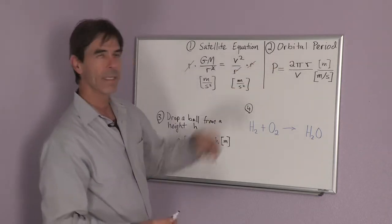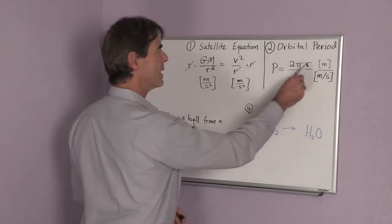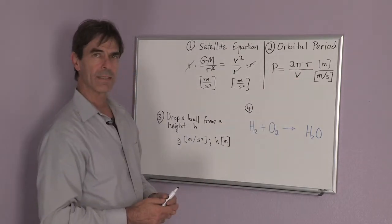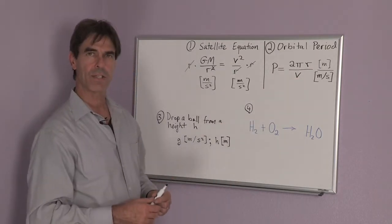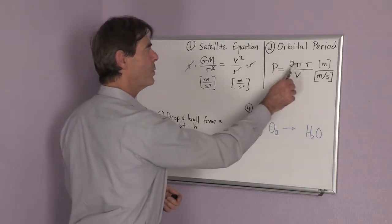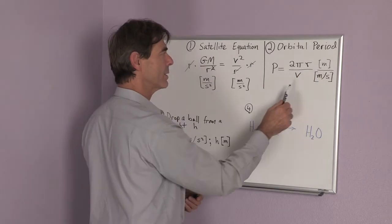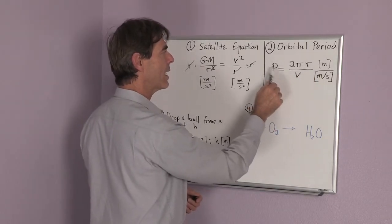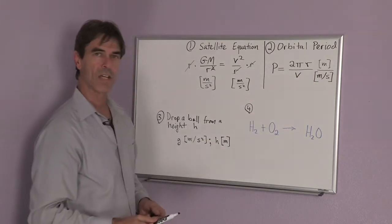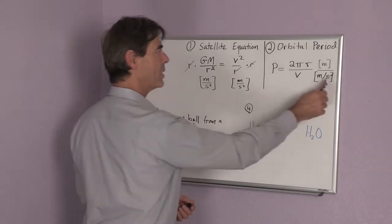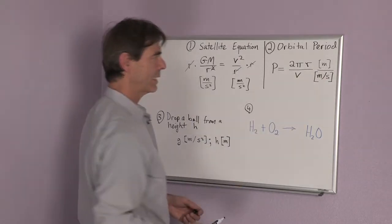If I want to know its orbital period, I can use this same principle. The distance that a satellite goes is the circumference of the circle of the orbit, which is 2 pi times r. That's in meters. If I want to know the period in time, I then just divide by the velocity in meters per second. And the answer is in seconds.